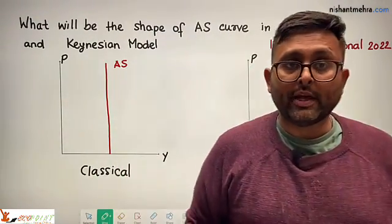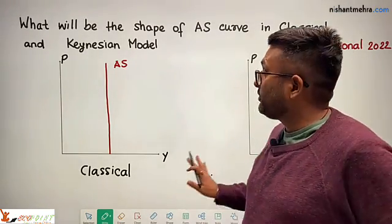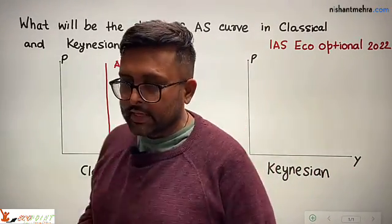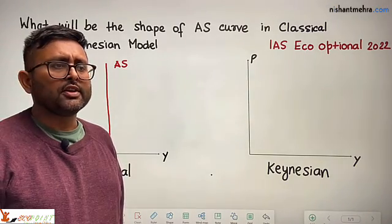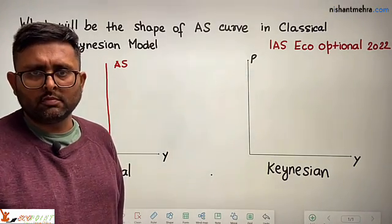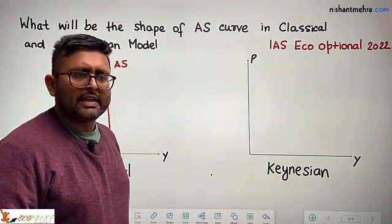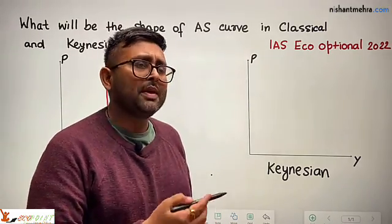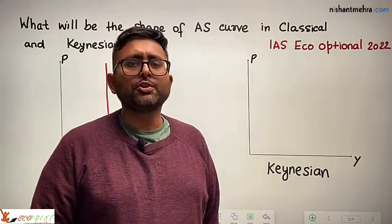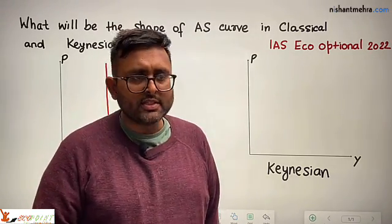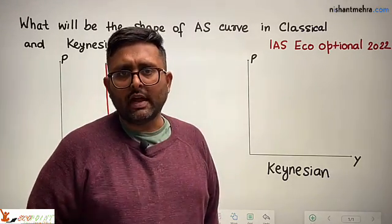In the Keynesian model, this is a short-run phenomenon. What happens is that firms have issued price catalogs. Once they have issued price catalogs and suddenly there is an increase in demand, making new catalogs is costly for them. They do not want to issue another set of catalogs, so they say, whatever the demand is, we will sell at the same price.